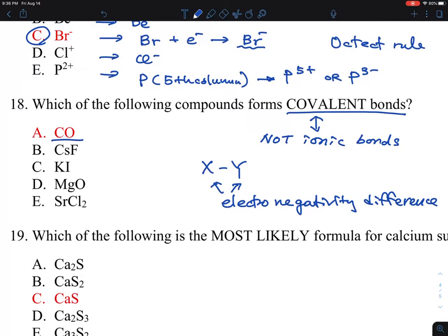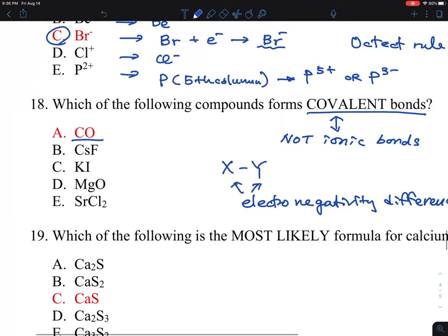and if you're looking at the carbon and oxygen, this is more like the electronegativity difference is not so much. Whereas, now you can see this, cesium is cesium plus, fluoride minus,